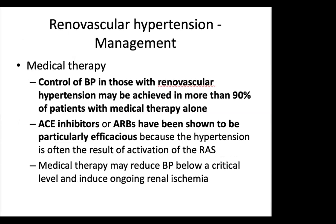For medical management of renal vascular hypertension, BP control is achievable in over 90% of patients with medical therapy alone. ACE inhibitors or ARBs are particularly efficacious since hypertension is often due to RAS activation; ACE inhibitors may control BP in 80% as monotherapy, rising to nearly 90% when combined with a diuretic. However, medical therapy may reduce BP below a critical level, inducing renal ischemia, tubular atrophy, glomerulosclerosis, and loss of function. Renal function should be closely monitored whenever antihypertensive agents are used in suspected renovascular hypertension.